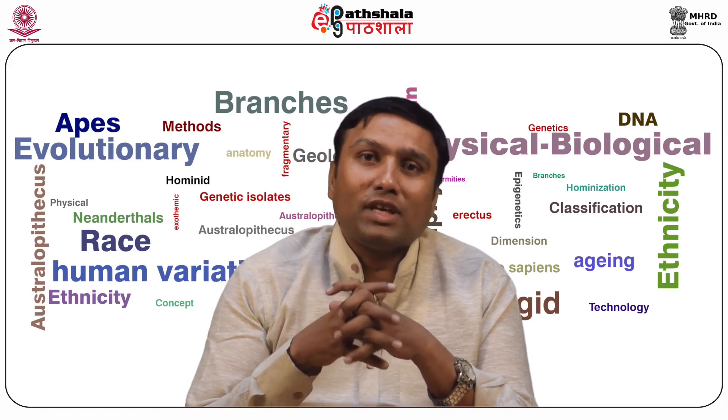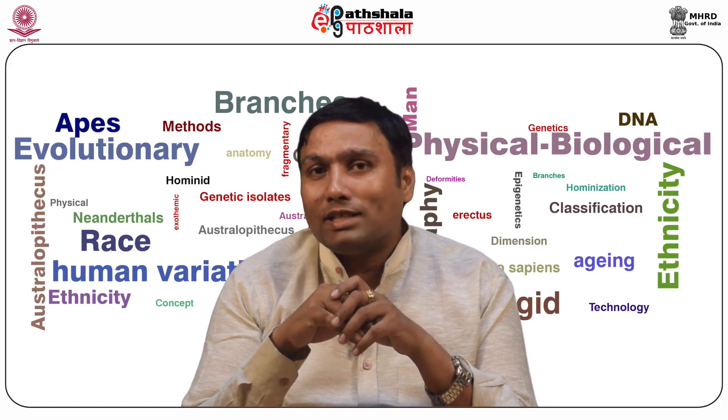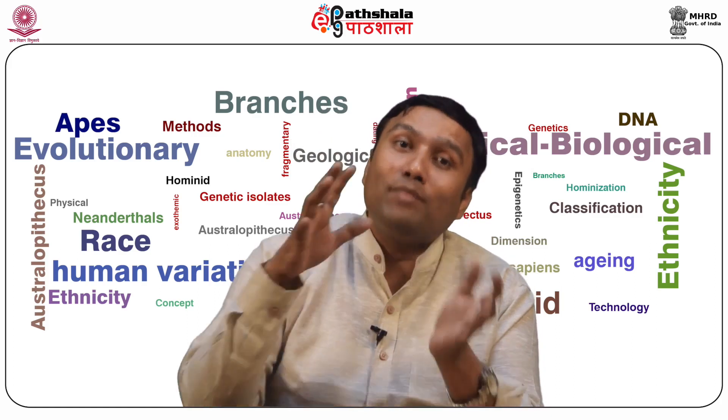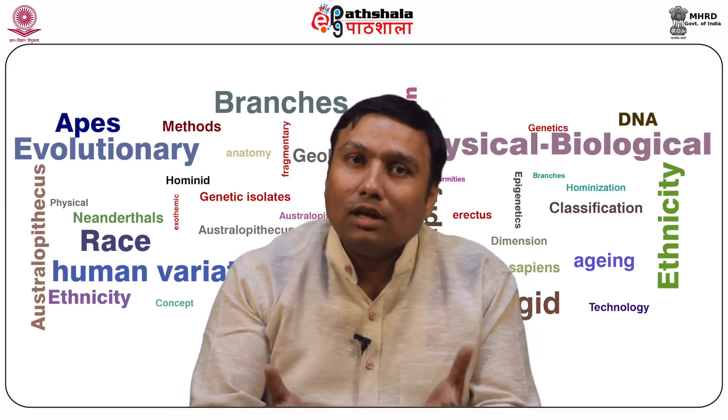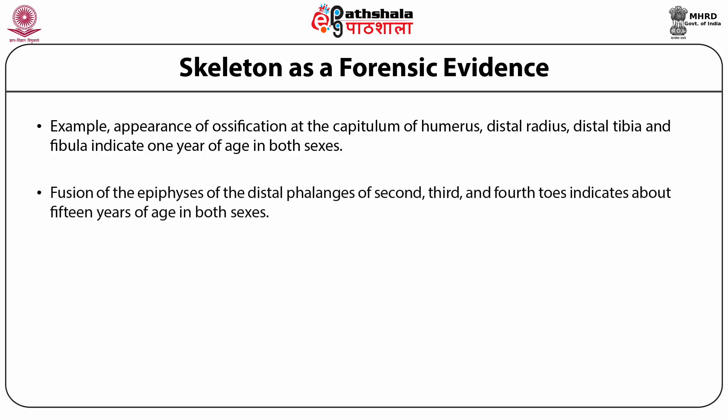Age can also be estimated from ossification of epiphyses and their fusion with the diaphysis. For example, appearance of ossification at the capitulum, distal radius, distal tibia and fibula indicates one year of age in both sexes. At about 21 years, ossification appears at the medial end of the clavicle. Fusion of the epiphysis of the great tubercle of the head of the humerus indicates about four years in females and five years in males. Fusion of epiphyses of the distal phalanges of the second, third and fourth toes indicates about 15 years in both sexes.